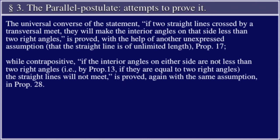The universal converse of the statement — if two straight lines crossed by a transversal meet, they will make the interior angles on the side less than two right angles — is proved with the help of another unexpressed assumption that the